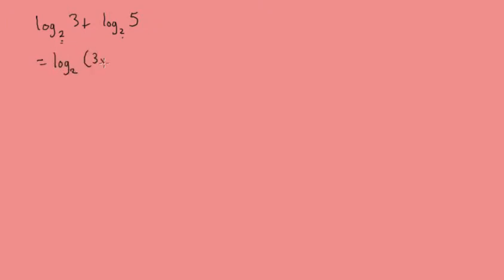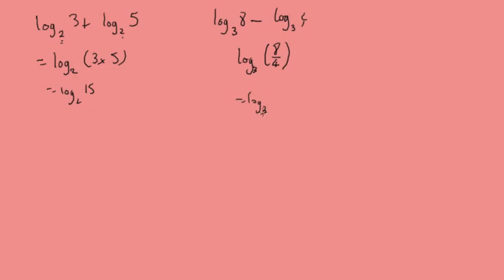So let's use these rules to do some examples and simplify these expressions. Firstly, log base 2 of 3 plus log base 2 of 5 — for these identities to work the bases need to be the same — so that equals log base 2 of 3 times 5, which is log base 2 of 15. Similarly, log base 3 of 8 minus log base 3 of 4 is log base 3 of 8 over 4, which is log base 3 of 2.